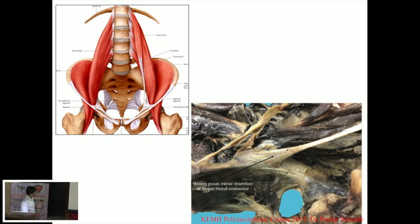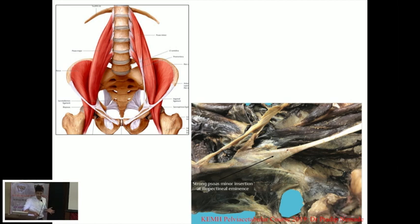Another variation to be aware of: sometimes there is a psoas minor muscle, which inserts exactly at the point where this arch lies. When the psoas minor muscle exists, the iliopectinal fascia becomes extremely tight — it will just not budge. This fascial extension of the psoas minor muscle makes the iliopectinal fascia an even tighter structure.